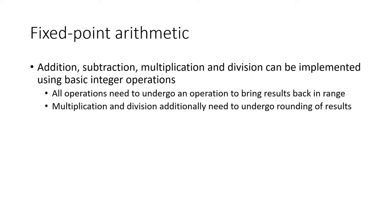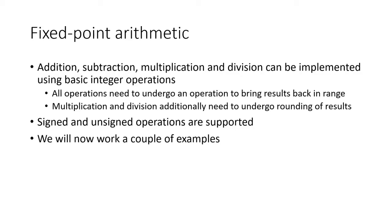All basic fixed point operations can be implemented using integer operations. However, since the point is fixed, additional considerations arise when considering the result of an operation. The result of an operation may land outside the valid fixed point range requiring a range reduction. Multiplication and division require extra care because they may produce results with unrepresentable fractional portions, necessitating rounding. Additionally, we must allow for unsigned and signed operations. We will now work a couple of examples to demonstrate these two issues and possible resolutions.